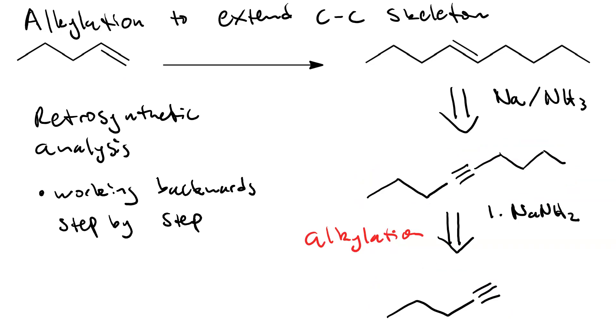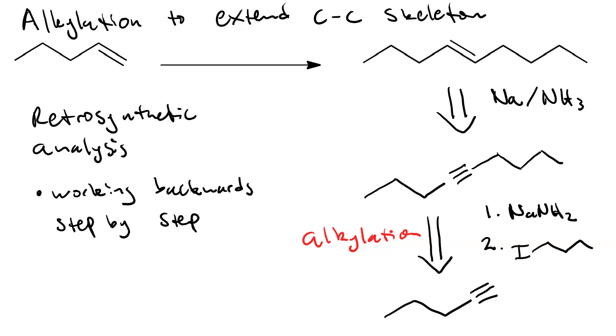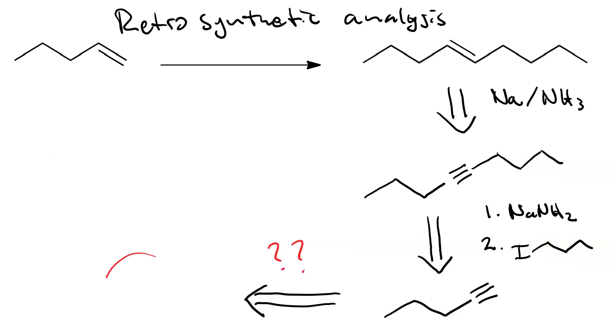To do alkylation, first we use sodium amide to deprotonate the terminal alkyne and make the alkyne ion. Once we have the alkyne ion, we react it with a primary alkyl halide that has the correct number of carbons. We're adding four, so I'm using 1-iodobutane. 1-bromobutane or 1-chlorobutane would work as well.